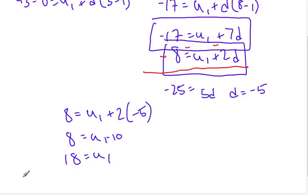So my general term is un equals u1, which is 18, plus d, which I know is negative 5, times n minus 1. This is the general term here.